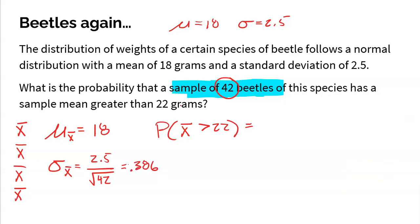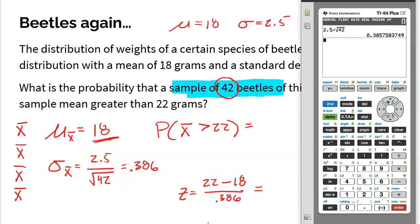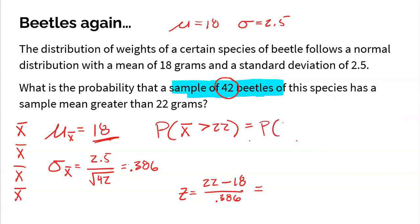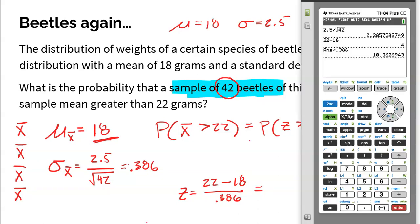To find the probability that a sample mean comes back greater than 22 grams, I need a z-score. The z-score for 22 is: 22 minus the mean of 18, divided by the standard deviation of 0.386. Doing that math: (22 − 18) / 0.386 = 10.363. So I'm trying to find the probability that a z-score is greater than 10.363 — that's going to be nearly impossible.